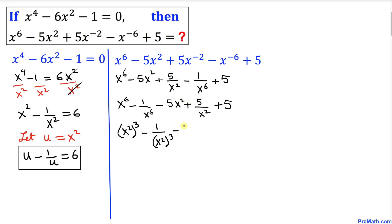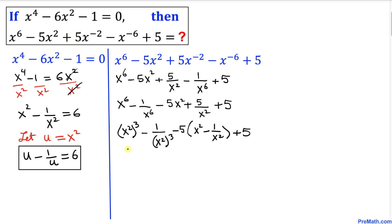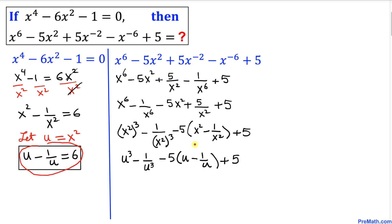We take -5 as a common factor from the middle terms, giving us (x² - 1/x²), plus 5. Since u = x², wherever we see x² we replace it with u. So this expression becomes u³ - 1/u³ - 5(u - 1/u) + 5.